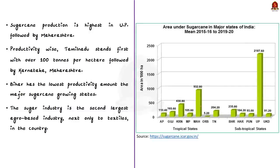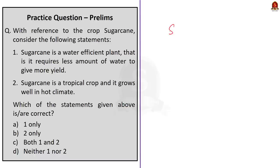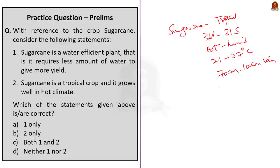See the sugarcane production is highest in Uttar Pradesh followed by Maharashtra. Productivity wise, Tamil Nadu stands first with over 100 tons per hectare followed by Karnataka and Maharashtra and Bihar has the lowest productivity among the major sugarcane growing states. Kindly note that the sugar industry is the second largest agro-based industry next only to the textiles in the country. That's all for this discussion. See in this article we have discussed about sugarcane which is a tropical crop. It is grown from the altitude 36.7 degree north to 31.0 degree south. It requires hot and humid climate and the temperature varies from 21 degree celsius to 27 degree celsius. Sugarcane requires rainfall between 75 centimeter to 100 centimeter and it can be grown in variety of soil. We have also seen that Uttar Pradesh is the highest producer whereas Tamil Nadu has highest productivity in sugarcane production. So that's all regarding this article.